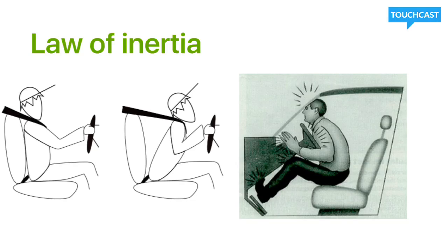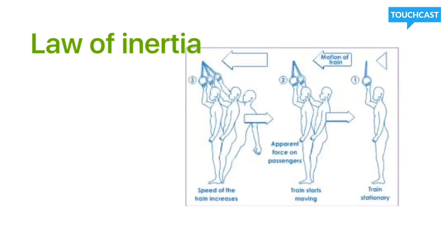Inertia is the tendency for an object to stay in motion or resist a change in motion — if it's sitting still, it doesn't want to start moving. If you had someone standing on a train, when the train starts moving forward, the person wants to stay where he is. So basically, when the train starts moving, the person starts to fall backwards because he wants to stay stationary. If he's holding on to a lever, like the diagram shows, he can provide enough force to stand up straight and will start moving with the train. This is another example of Newton's law of inertia.